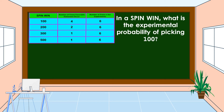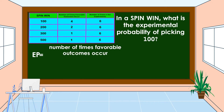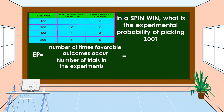In a Spin-Win, what is the experimental probability of picking 100? The formula for finding the experimental probability of an event is equal to the number of times favorable outcomes occur divided by the number of trials in the experiment. As we can see in the table, the number of times favorable outcomes occur for 100 is 4, and the number of trials in the experiment is 6.